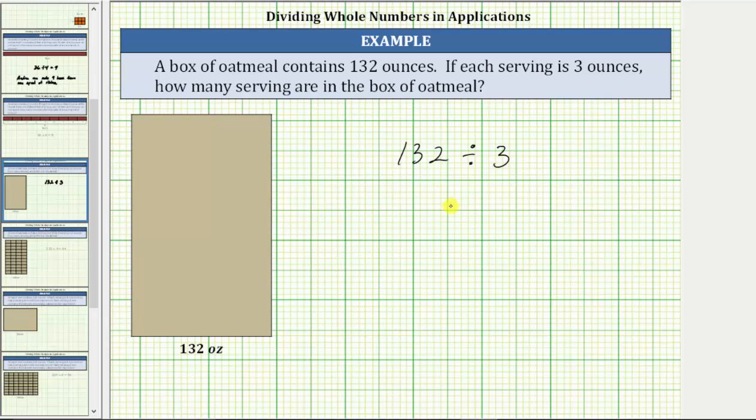Let's find this quotient using long division. We have 132 divided by three.